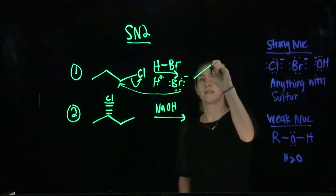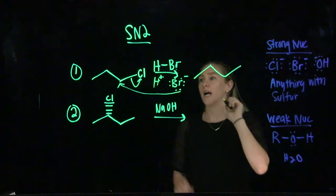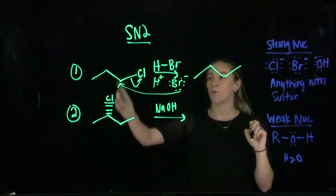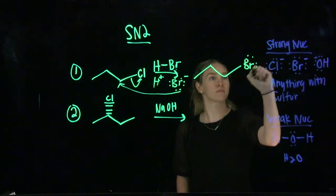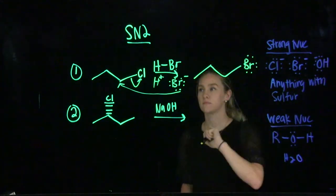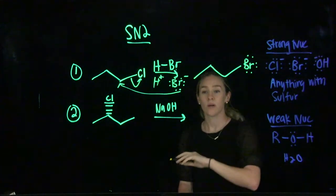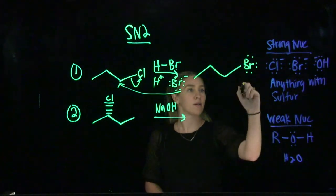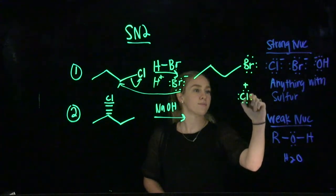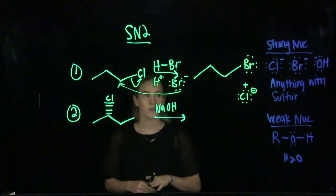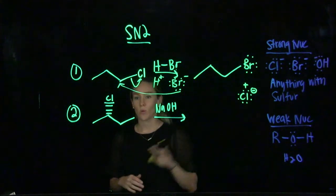That means we are essentially replacing that chlorine with our bromine. And then we also have the second product, the leaving group that we just lost. So here's the mechanism of number one.